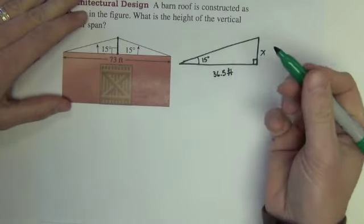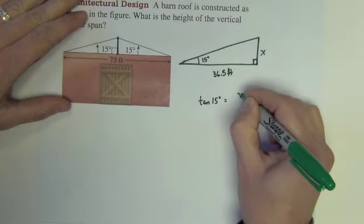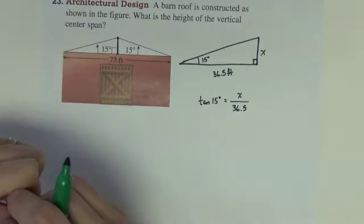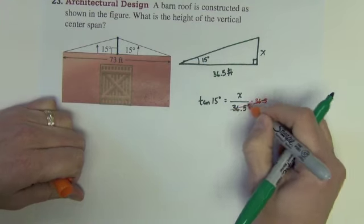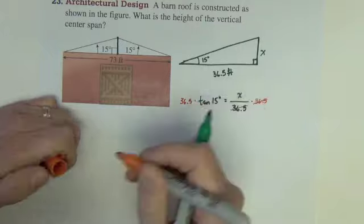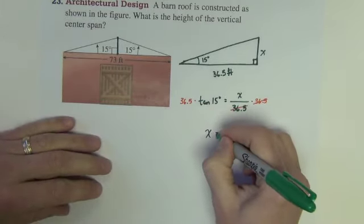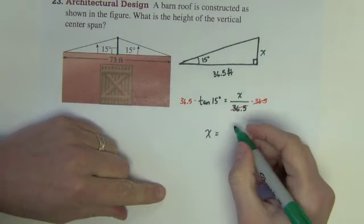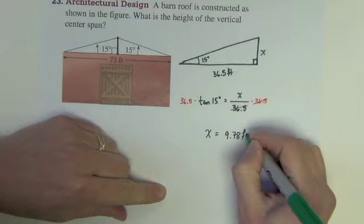We're after that height there. So we could say, again it's a tangent ratio. We could say tan of 15 degrees equals the opposite x over 36.5. Solve this by multiplying both sides by 36.5. And the x equals, from the calculator we get 9.78 feet.